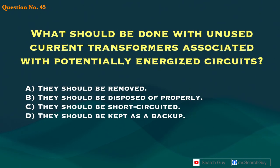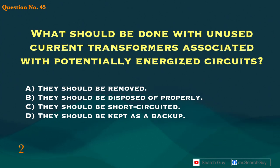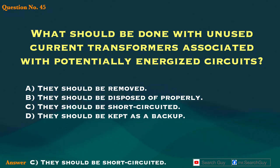Question 45. What should be done with unused current transformers associated with potentially energized circuits? A. They should be removed. B. They should be disposed of properly. C. They should be short circuited. D. They should be kept as a backup. Answer: C. They should be short circuited.